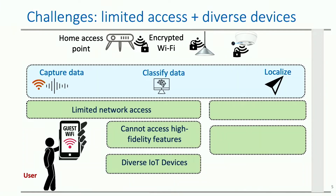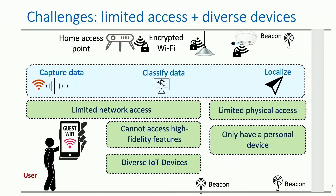The problem becomes even more difficult because of the diverse transmission behavior of IoT devices. A camera might be transmitting every 15 milliseconds, whereas a smart plug might only transmit once every minute. Localization is also challenging because of limited physical access to the user. That means a user cannot instrument the environment or install beacons to localize the devices. Moreover, a typical user is also not carrying expensive RF sensing equipment, but they do have access to a personal device such as a mobile phone or a laptop.